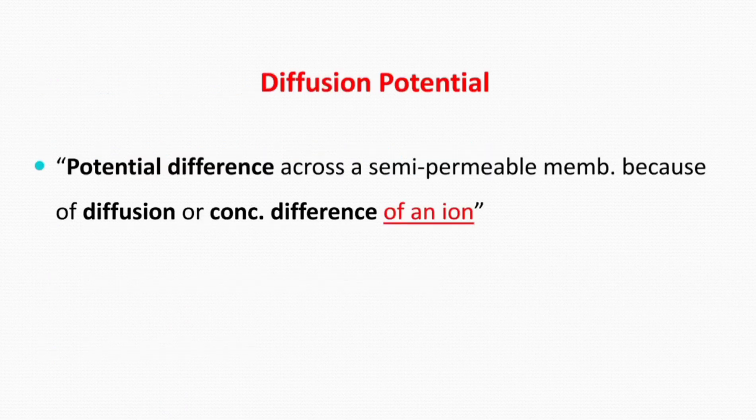Diffusion potential, as the name indicates, is the potential due to diffusion of an ion — the potential on a membrane due to diffusion, or you can say the concentration difference, of an ion.